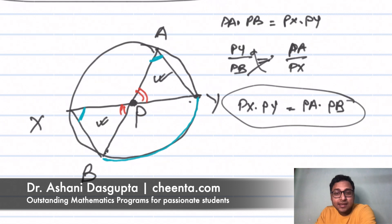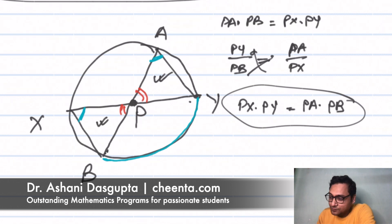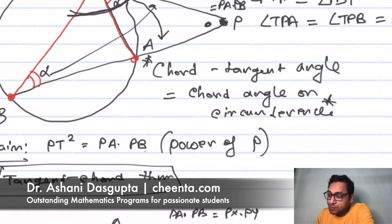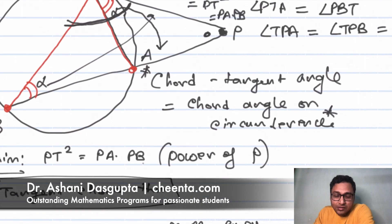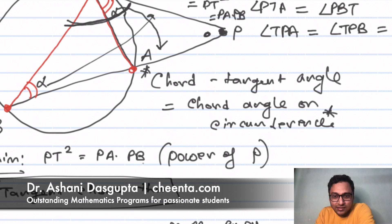That was the Power of the Point P with respect to the circle. We learned how to compute power of a point with respect to a circle, and proved both theorems that validate the formula. Power of a point is used in many types of problems. If you look at the link in the description, you'll find a link to the learn page at Chinta where you can see more problems and concepts in geometry. All the best — I'll see you in the next one, take care!